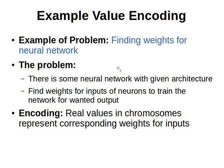The real values on the chromosomes represent the corresponding weights for the inputs, so each chromosome represents a set of weight values. That's how we can use genetic algorithms to solve the neural network weight-finding problem. In the next video we'll briefly speak about tree encoding — thanks for watching and see you next time.